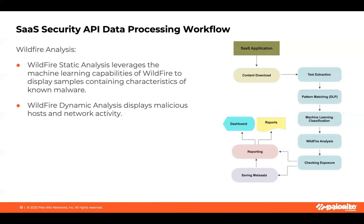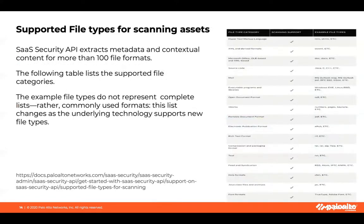Some notes on wildfire analysis: there are two types — static and dynamic. A static analysis displays files that show characteristics of known malware. The dynamic analysis focuses on host and network activities and reports if there are harmful activities. There are more than 100 file types that SaaS Security API can scan. We have a table in the online documentation that shows a list of all supported and more commonly used file type categories.